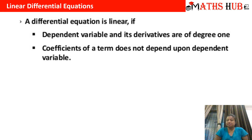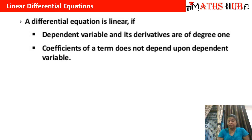A differential equation is said to be linear if the dependent variable and its derivatives are of degree 1, and the coefficients of a term do not depend upon the dependent variable. That means there are three things to check. First of all, the dependent variable — so if we have dy/dx, then y is the dependent variable.